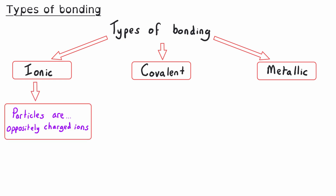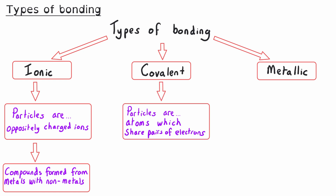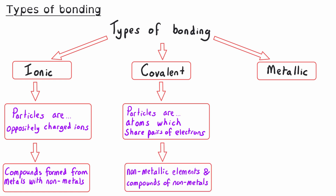For ionic bonding, the particles are oppositely charged ions, and it occurs in compounds formed when metals are combined with non-metals. For covalent bonding, the particles are atoms which are sharing pairs of electrons, and it occurs in most non-metallic elements and in compounds made of non-metals.